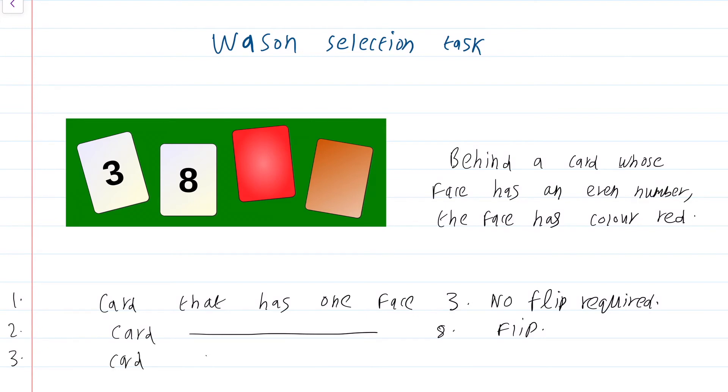So, card that has one face red, no flip. It is completely irrelevant whether the opposite face is even number or not. That is not what the proposition is saying. It is not saying that if one face is red, the other face should be even. So, it is completely irrelevant.